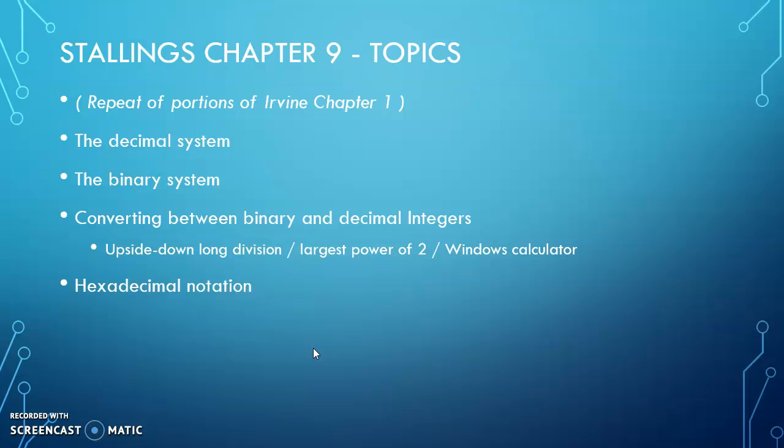We need to be able to take that hex and translate it into decimal. And in some cases, we actually need to consider the underlying binary in terms of validating the results. Again, this is an overlap of Irvine Chapter 1, focusing on number systems.